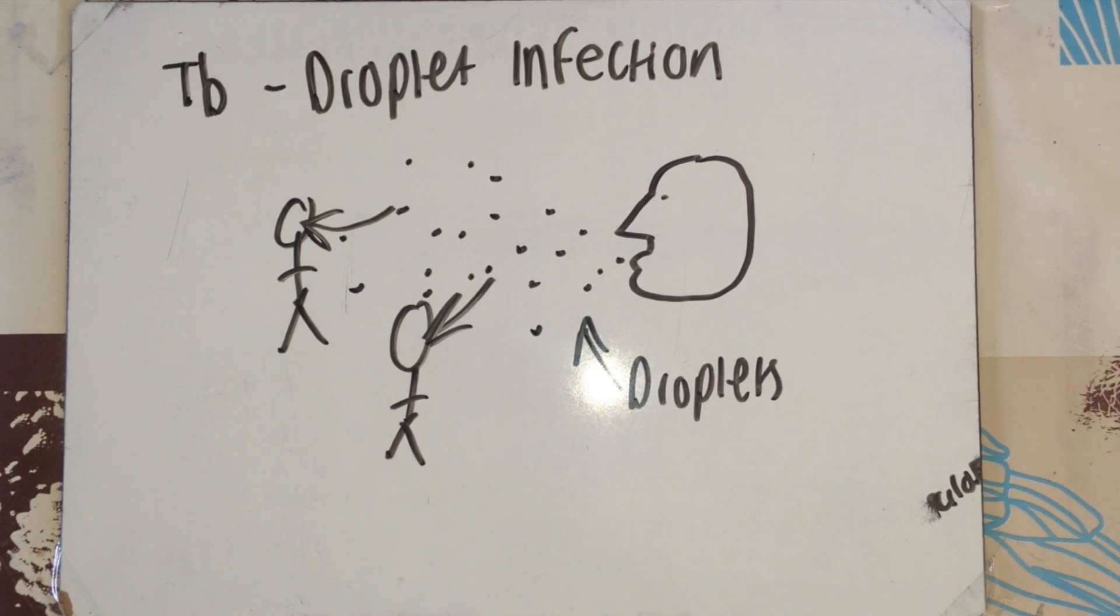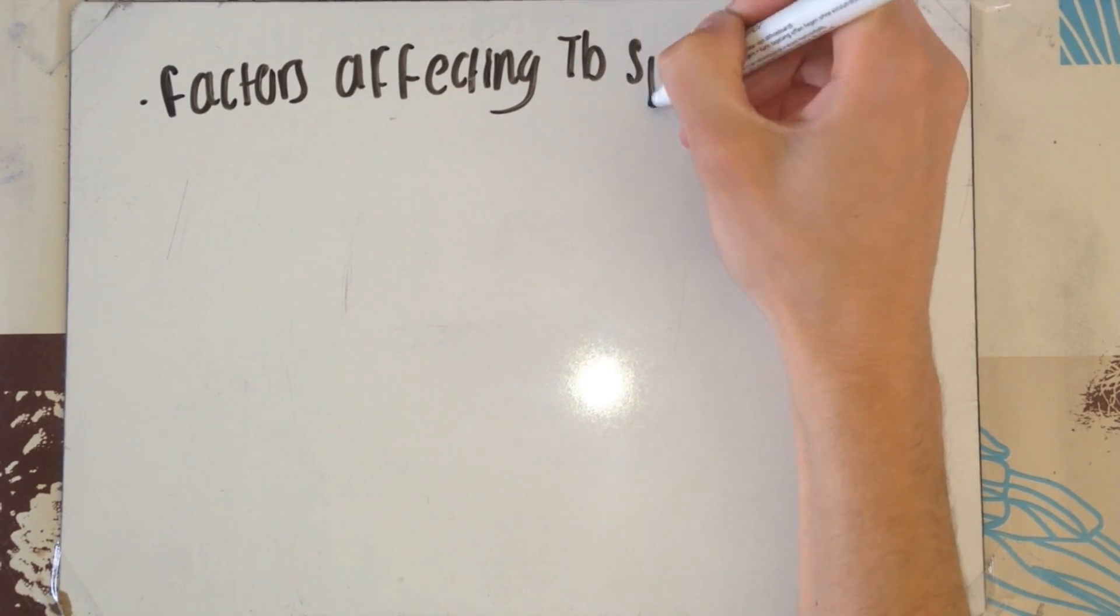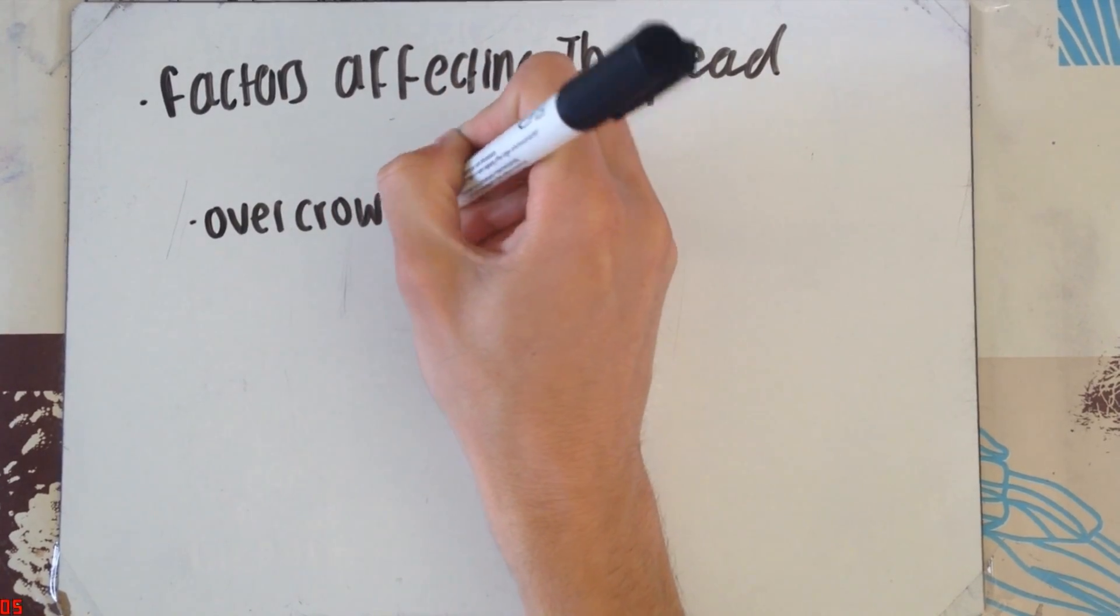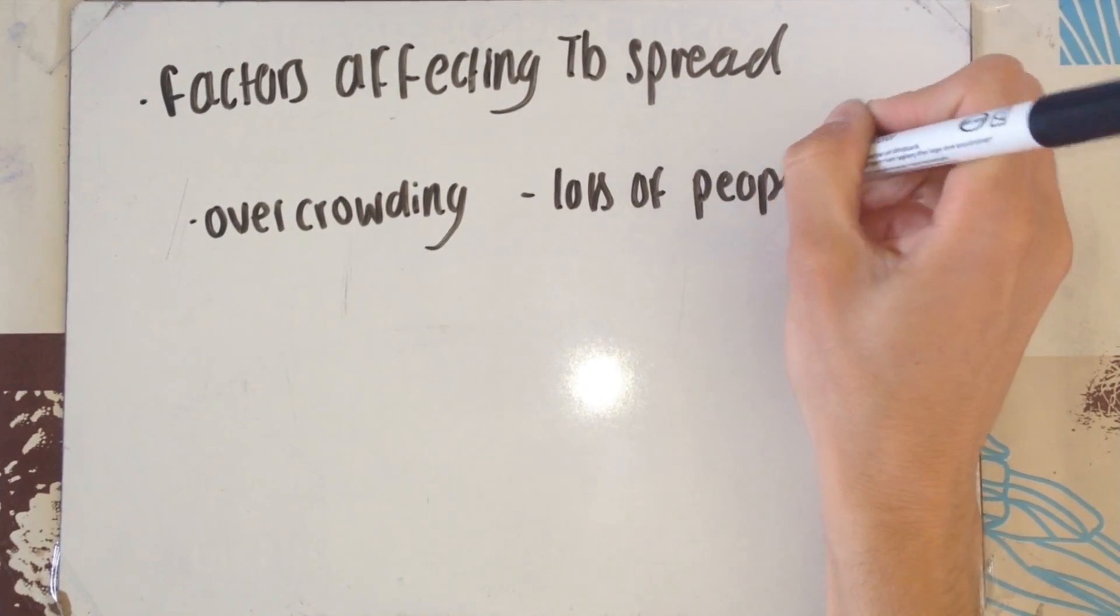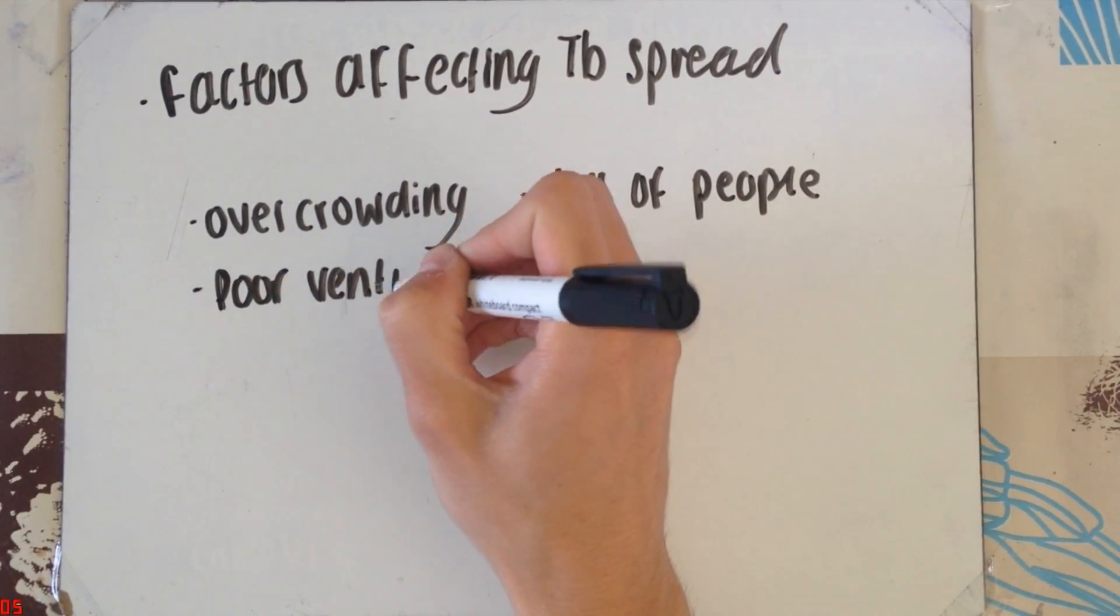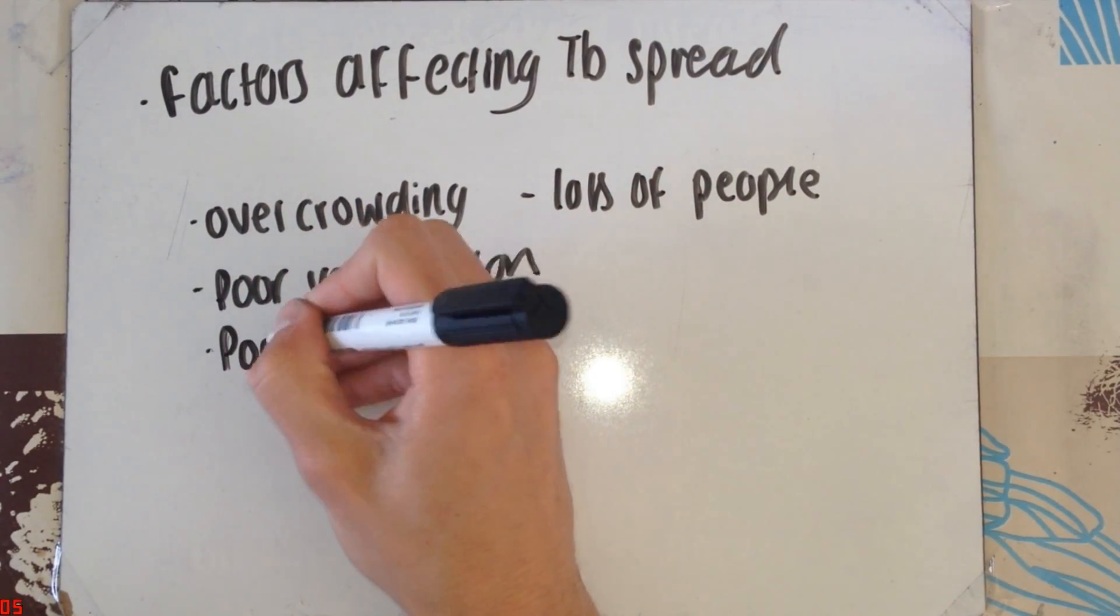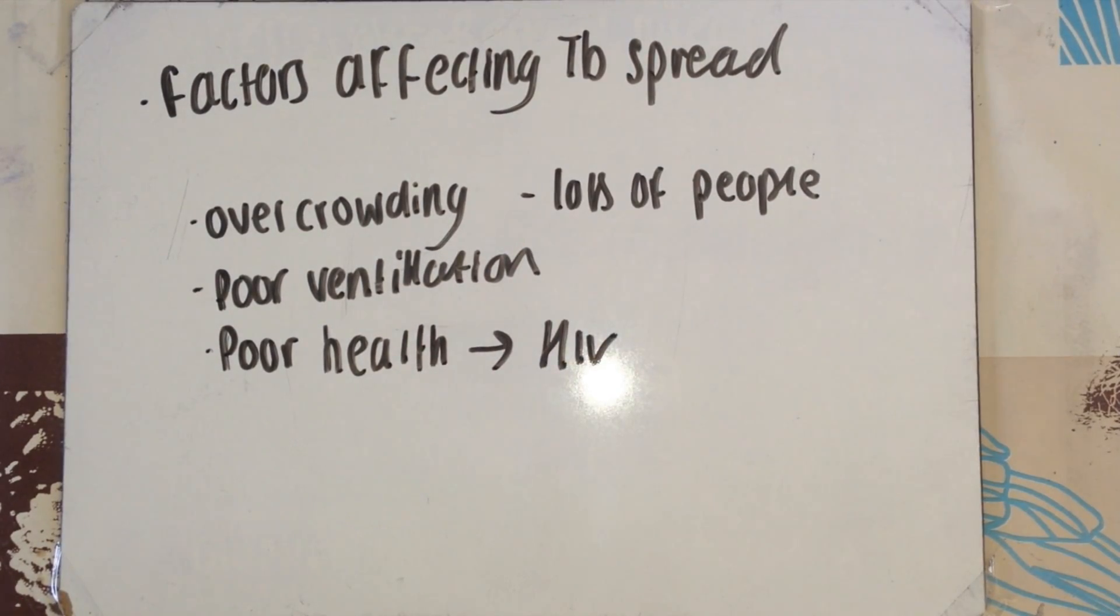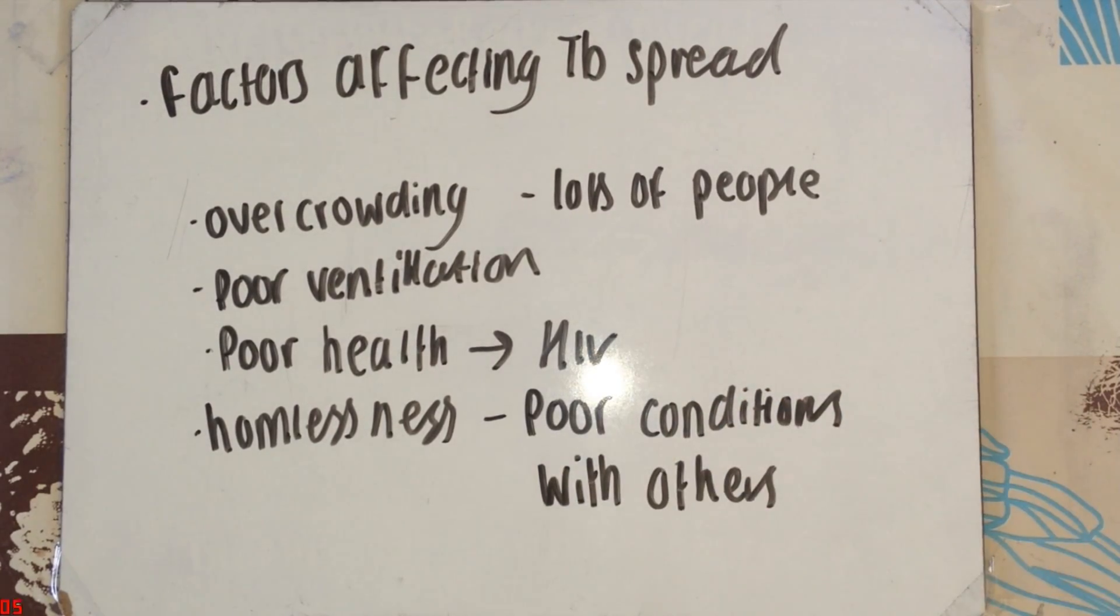But in crowded areas, that is not hard at all. As I mentioned crowded areas, I'm now going to talk about the factors that can increase the spread of tuberculosis. First of all, overcrowding. If you're in an overcrowded area, you have loads of people coughing and sneezing all the time, so you have much more chance of catching this disease. Poor ventilation means the droplets remain in the air for longer, so you'll be exposed to these bacteria for longer. Poor health. If you already have a weakened immune system, such as having a disease such as HIV, you are far more likely to catch tuberculosis. Homelessness. You'll be exposed to poor conditions with other individuals who may or may not have this disease.